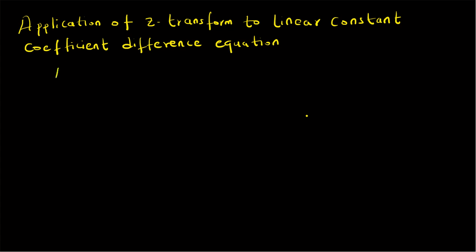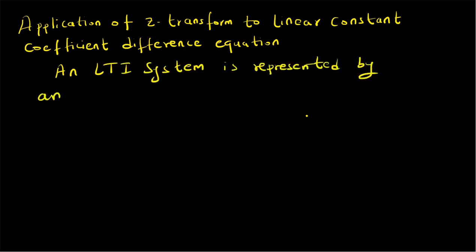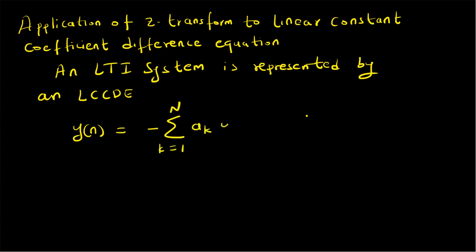Recall that a discrete LTI system can be represented by an LCCDE, that is a linear constant coefficient difference equation. A general LCCDE can be written as y(n) = minus summation k=1 to N of a_k·y(n-k), plus summation k=0 to M of b_k·x(n-k). So the output y(n) is basically a linear combination of the past outputs and the inputs.